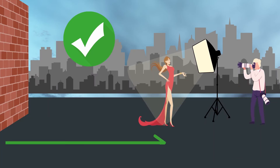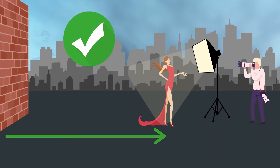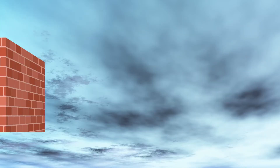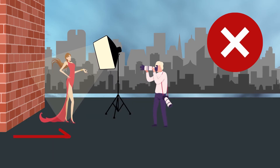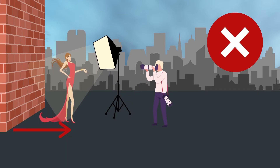To get that blurry background at 6.3, keep in mind that your subject has to be as far away from the background as possible. People that say the kit lens isn't capable of background blur — that's hogwash. It's more about location and placement to get that blurry background at any f-stop, really.